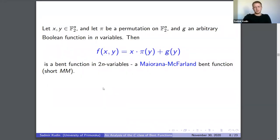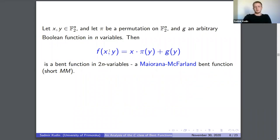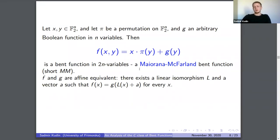We have the Maiorana-McFarland result: a function defined as f(x,y) = x·π(y) + g(y), where π is a permutation of F2^n and g is an arbitrary function in n variables, is a bent function in 2n variables. When you split your space in half — first half and second half of coordinates — and define your function this way, this is the Maiorana-McFarland construction. We then want to look at affine equivalent functions.